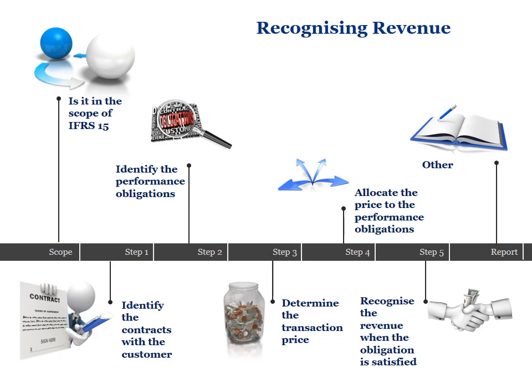Step 3 also provides additional guidance for non-cash consideration, such as barter transactions, and for situations where an entity might have to make a payment to their customer. Once we've determined our deliverables in step 2 and our total consideration in step 3, it is then necessary in step 4 to allocate what we've determined in step 3 across our performance obligations identified in step 2. Should only a single performance obligation be identified, step 4 is not going to be relevant, as the total transaction price will be recognized as that performance obligation is delivered.